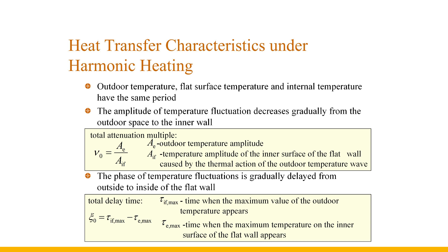Due to the poor thermal stability of rooms with lightweight materials, even in winter it is necessary to consider the characteristics of unsteady heat transfer. Among the thermal effects of periodic fluctuations, the simplest and most basic is the harmonic thermal effect — that is, temperature changes as a sine or cosine function of time, which is generally represented by a cosine function.